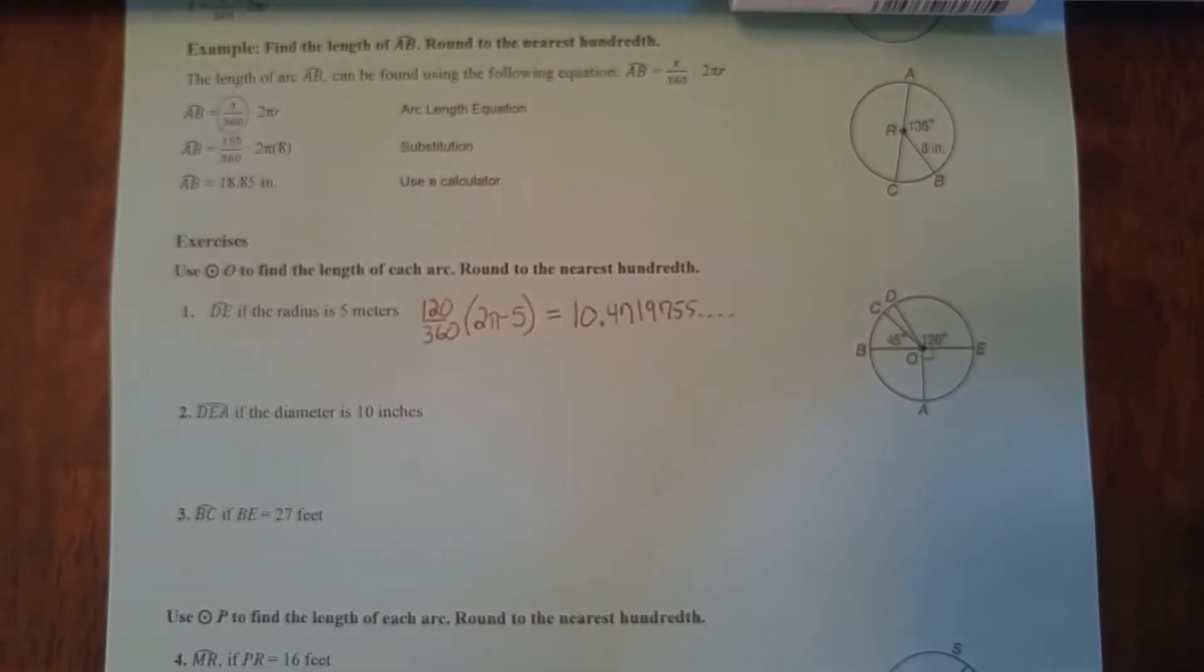Let's plug this in our calculator. So I have a π button in my calculator and I use that. If you type in 3.14 for π, your answer might be a little bit different. What I did was I typed in 120, division sign, 360, multiplication sign, 2, multiplication sign, π sign, multiplication sign, 5.